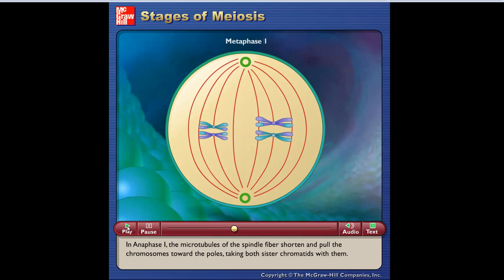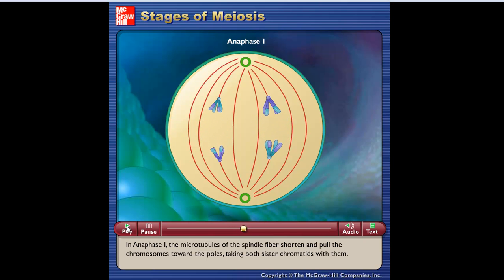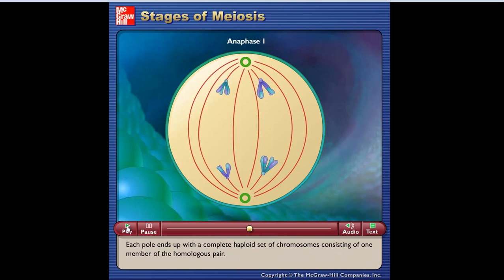In anaphase I, the microtubules of the spindle fiber shorten and pull the chromosomes toward the poles, taking both sister chromatids with them. Each pole ends up with a complete haploid set of chromosomes consisting of one member of the homologous pair.